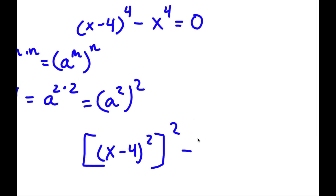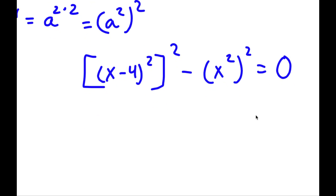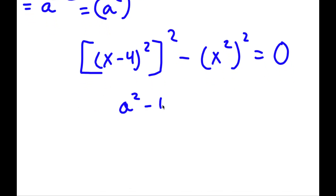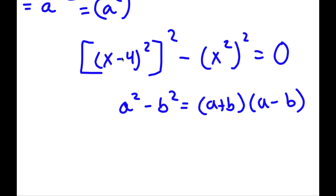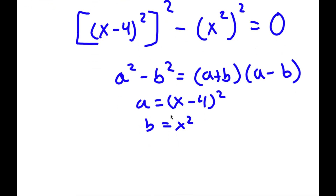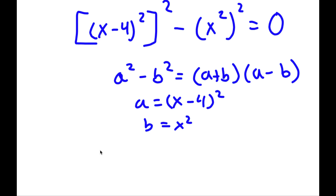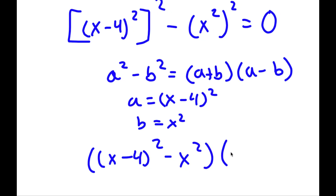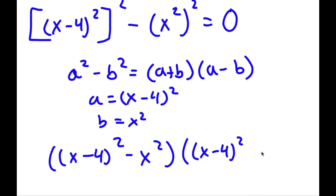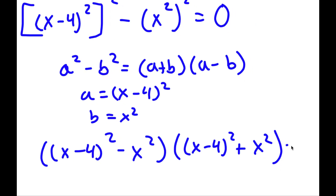Now I'm going to do the same thing with x to the power of 4: x⁴ equals (x²)². This is equal to zero. Now if I have something in the form a² minus b², this equals (a plus b)(a minus b). So in this case a is (x minus 4)² and b is x², giving us [(x minus 4)² minus x²] times [(x minus 4)² plus x²] equals zero.